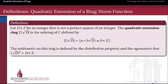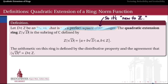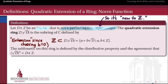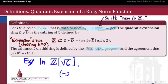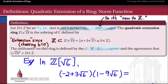A quadratic extension of the integers is what we get when we take a number D which is not a perfect square of another integer — something like the square root of 5 or the square root of negative 15. We throw it in by forming all linear combinations a plus b times the square root of D. We call it an extension because the integers themselves lie within it as a sub-ring; all we need is to choose b equal to 0.